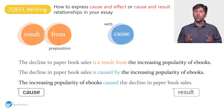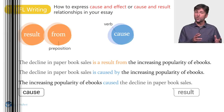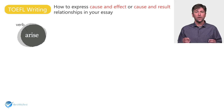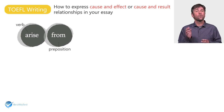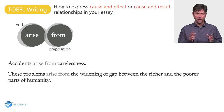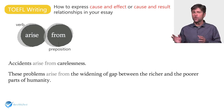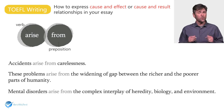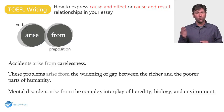Another word you could use to introduce the cause of something is arise, followed by the preposition from. For example: Accidents arise from carelessness. These problems arise from the widening gap between the richer and the poorer parts of humanity. Mental disorders arise from the complex interplay of hereditary, biology and environment.